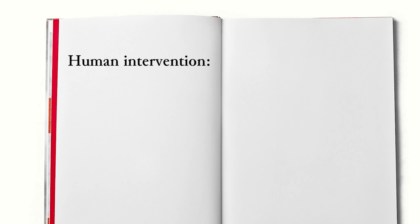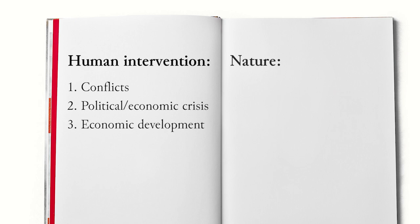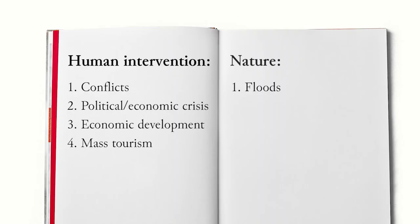First of all, we have to distinguish between the risks coming from human intervention and from nature. Threats to cultural heritage derived from human intervention can be broadly identified as: conflicts including war and terrorism, political and economic crises causing looting, economic development such as agriculture, construction of small and large-scale infrastructures, and mass tourism. Apart from the damages due to human intervention, natural disasters such as floods, earthquakes, fires, and hurricanes are another great risk for cultural heritage.